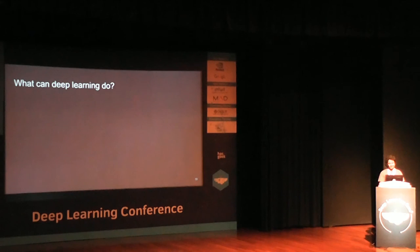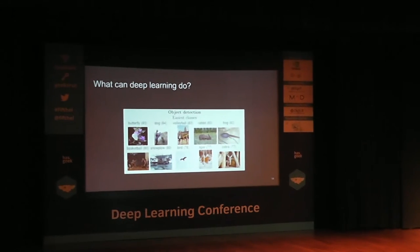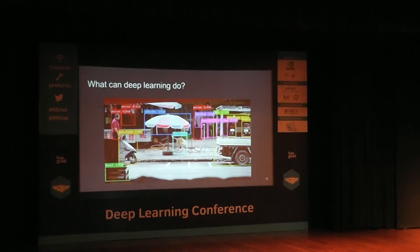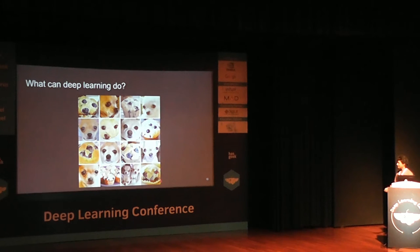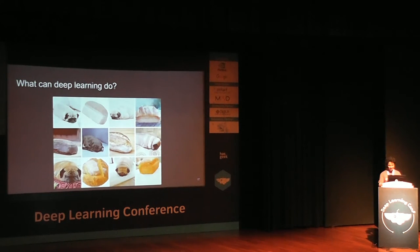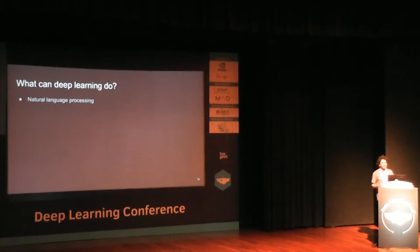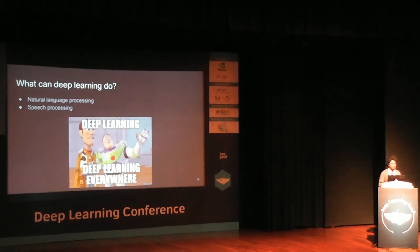Let's start with something interesting — what can deep learning do? For images, it can classify different categories: butterfly, dog, volleyball. People love classification between dogs and cats. RCNNs can classify different parts of an image, and it's very fast. It can also distinguish between a muffin and a dog, or a pug and a loaf of bread. Deep learning can also be used in natural language processing with text data, sentiment analysis. And also for speech processing — if you're using Siri, it's machine learning and deep learning. It's everywhere.